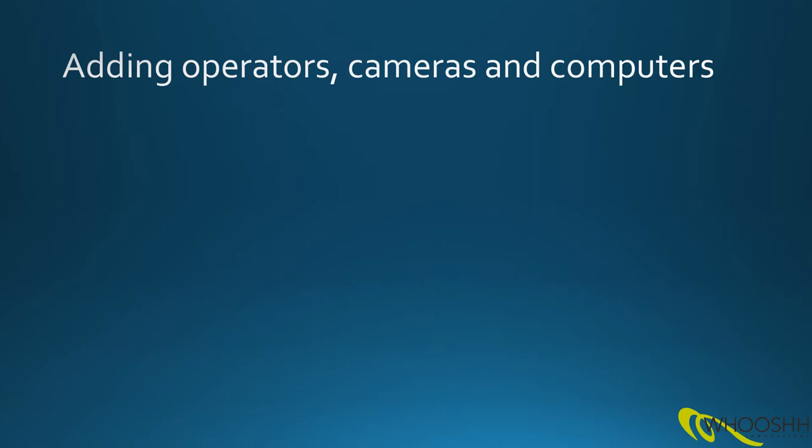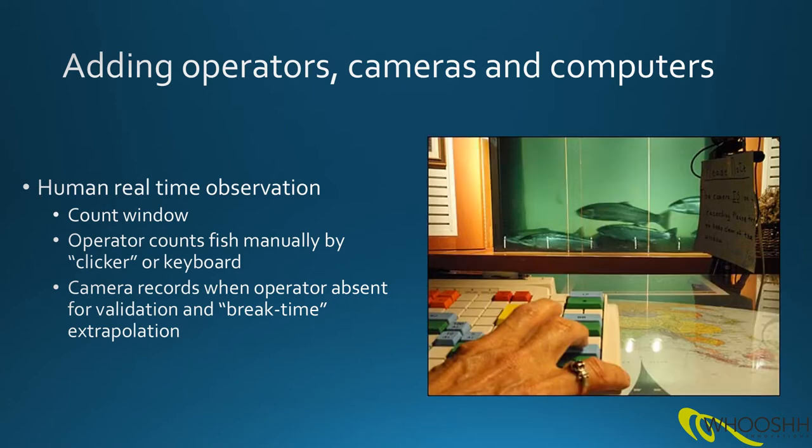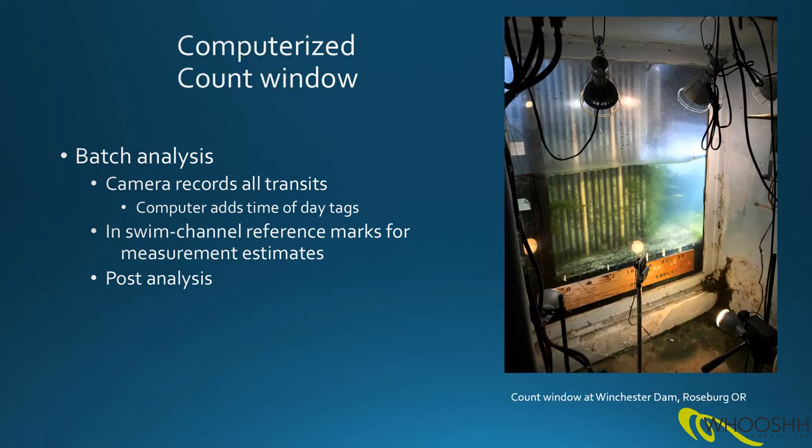By adding operators, cameras and computers, the process of data gathering can be augmented. An operator sitting in front of the observation window can count the fish manually using a clicker or a keyboard. And when he's absent, a camera can also record fish transits for later analysis. In this example, at the Winchester Dam in Roseburg, Oregon, a camera records all the transits, and then a computer post-processes the images, adds time of day tags, and then post-analysis is able to do the fish counting and get some size data by using the swim channel reference marks that are below the observation window.